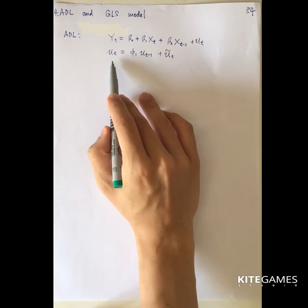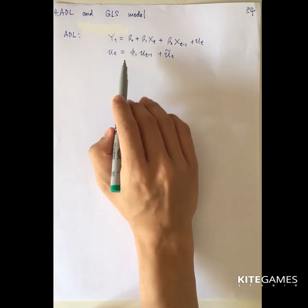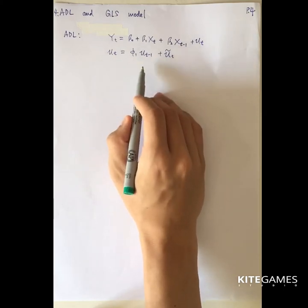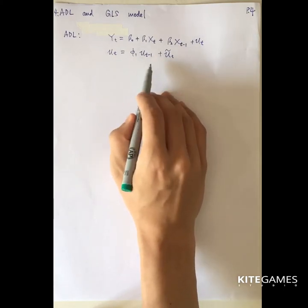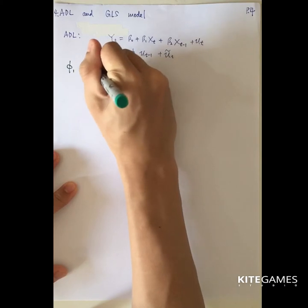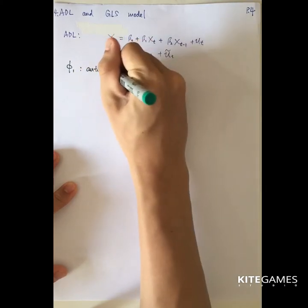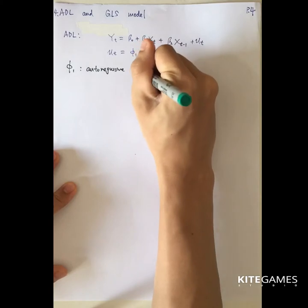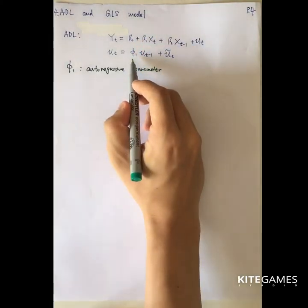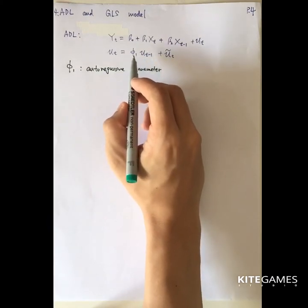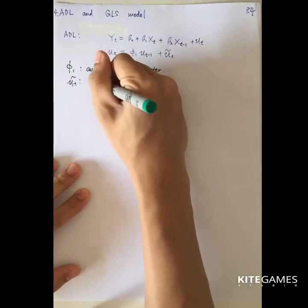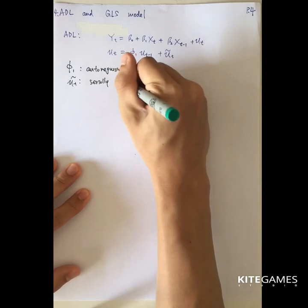Here we assume that the error term suffers from the autocorrelation problem. So ut is equal to some past value phi_1 times ut minus 1 plus u-tilde_t. Here phi_1 is the autoregressive parameter, which should be not equal to 0 and its absolute value is less than 1. Then u-tilde_t is the serially uncorrelated term.